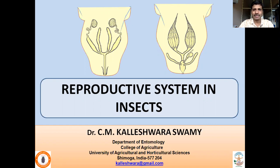Insects have very high reproductive capacity. One of the important reasons for the dominance of insects is their capacity to produce more offspring. They are master exploiters of environmental conditions. Whenever food is plentiful, they produce more offspring.